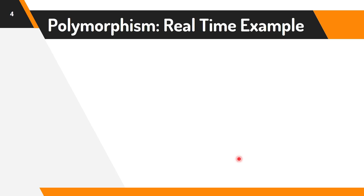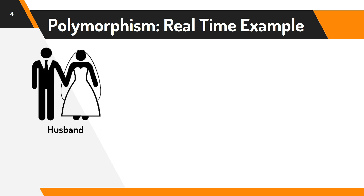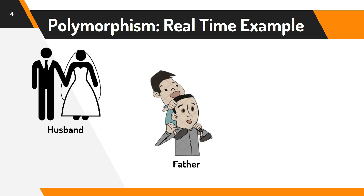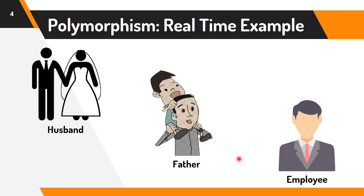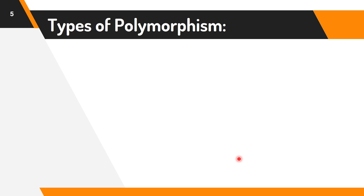We have here a real-time example of polymorphism. A person at the same time can have different characteristics. Like a man at the same time is a husband, a father, and an employee. So the same person possesses different behavior in different situations. This is called polymorphism in Java.